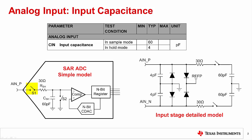In hold mode, the switch S1 is opened, and the ADC will convert the sampled signal. This time period is often called the conversion cycle. While in hold mode, the input capacitance is equal to the parasitic capacitance of the input diode structure, which is typically 4 picofarads.